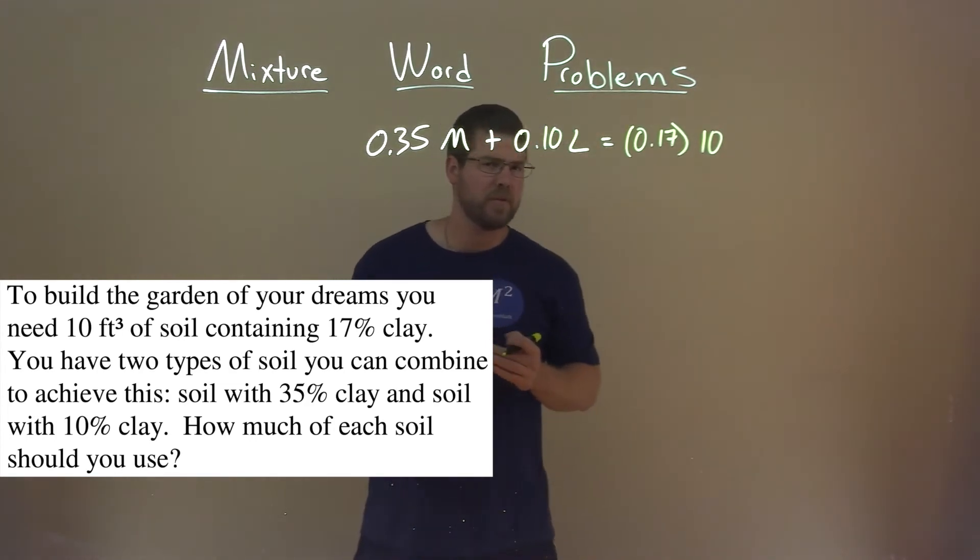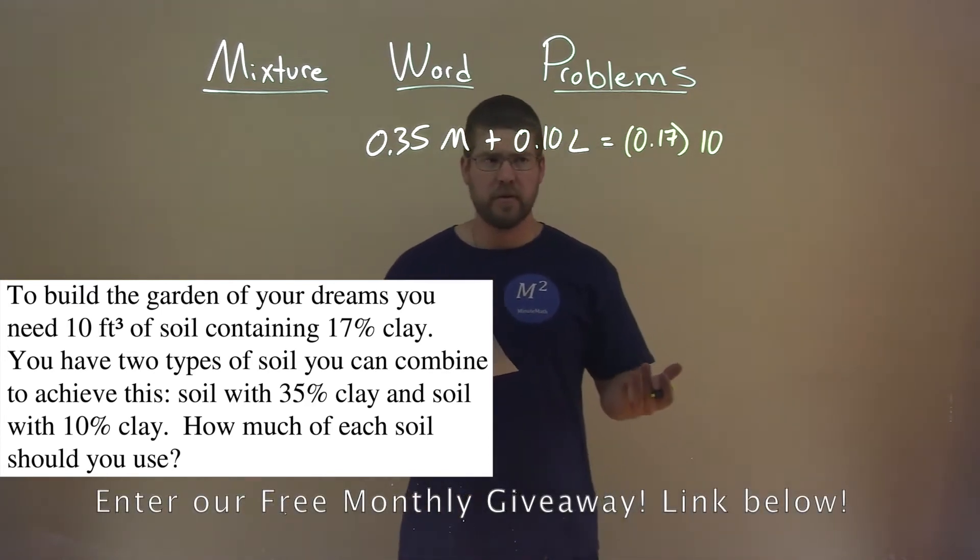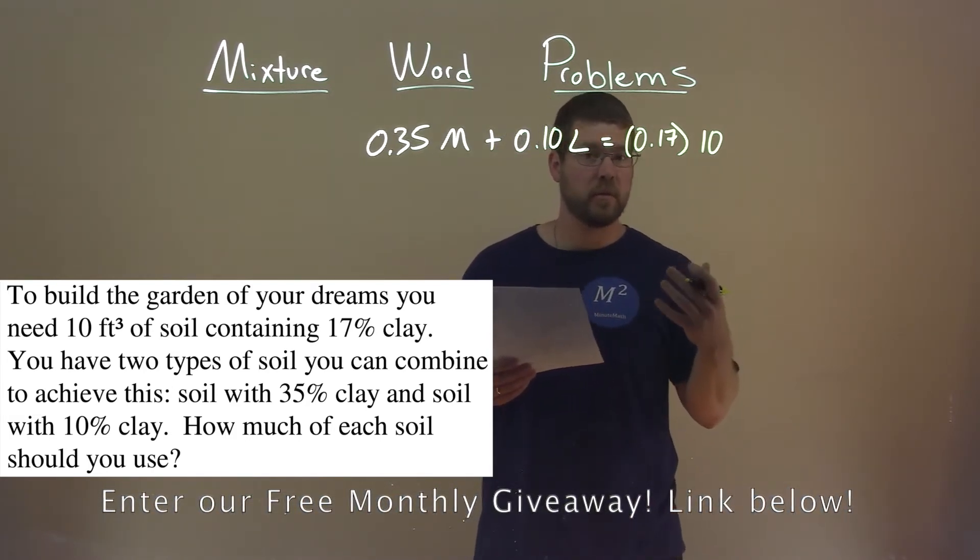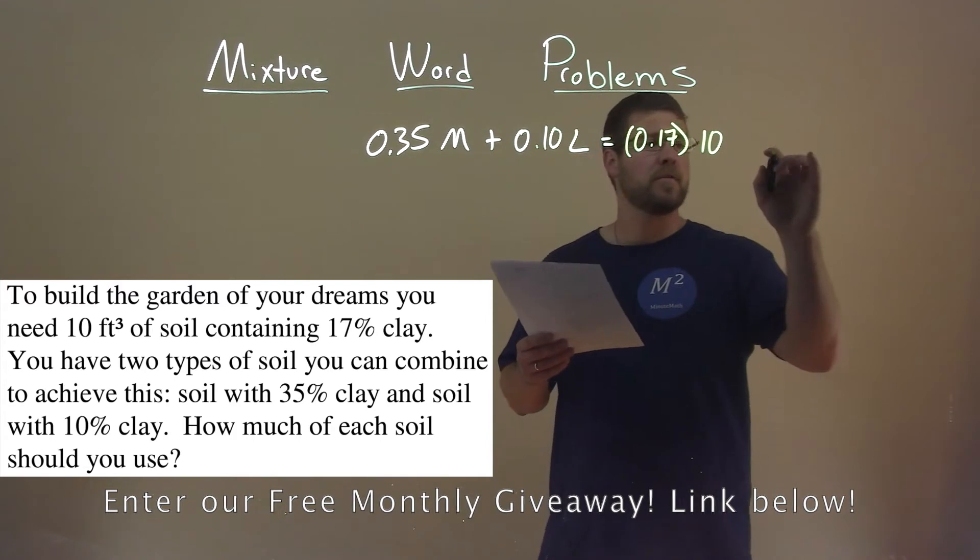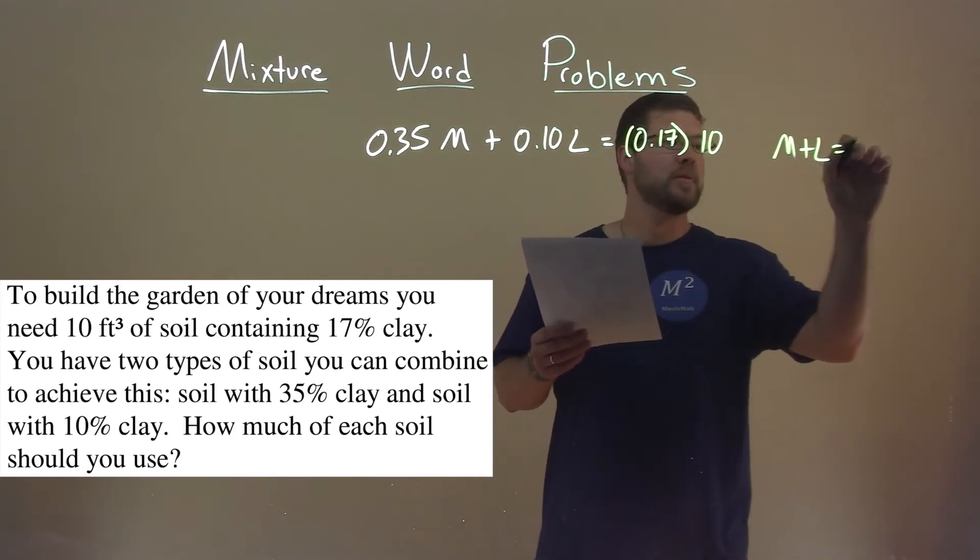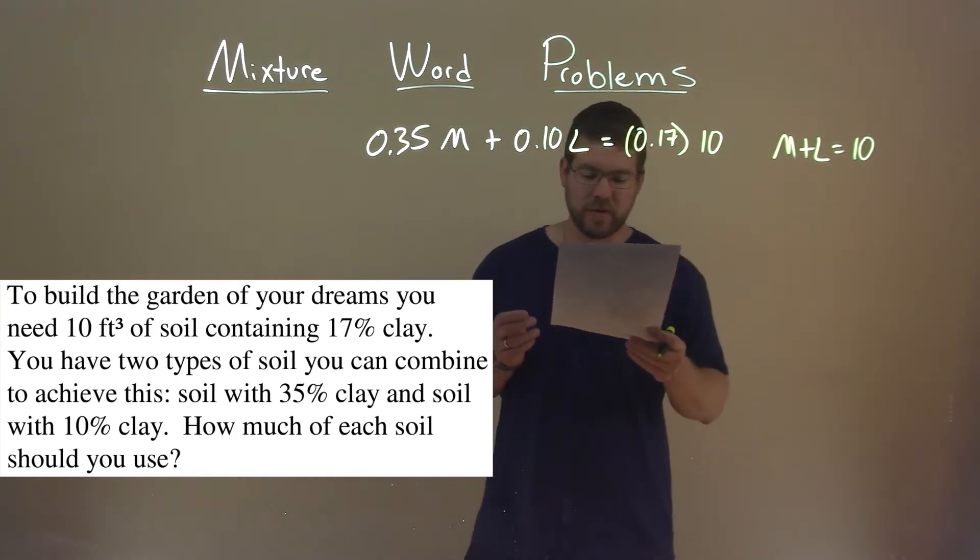But you first notice this equation here we can't really solve. We have two variables in one equation. Can we create another equation? Well, let's make an equation for the total number of cubic feet of the soils. So cubic feet of M plus the cubic feet of L should equal 10 total cubic feet. And now we have two equations here.